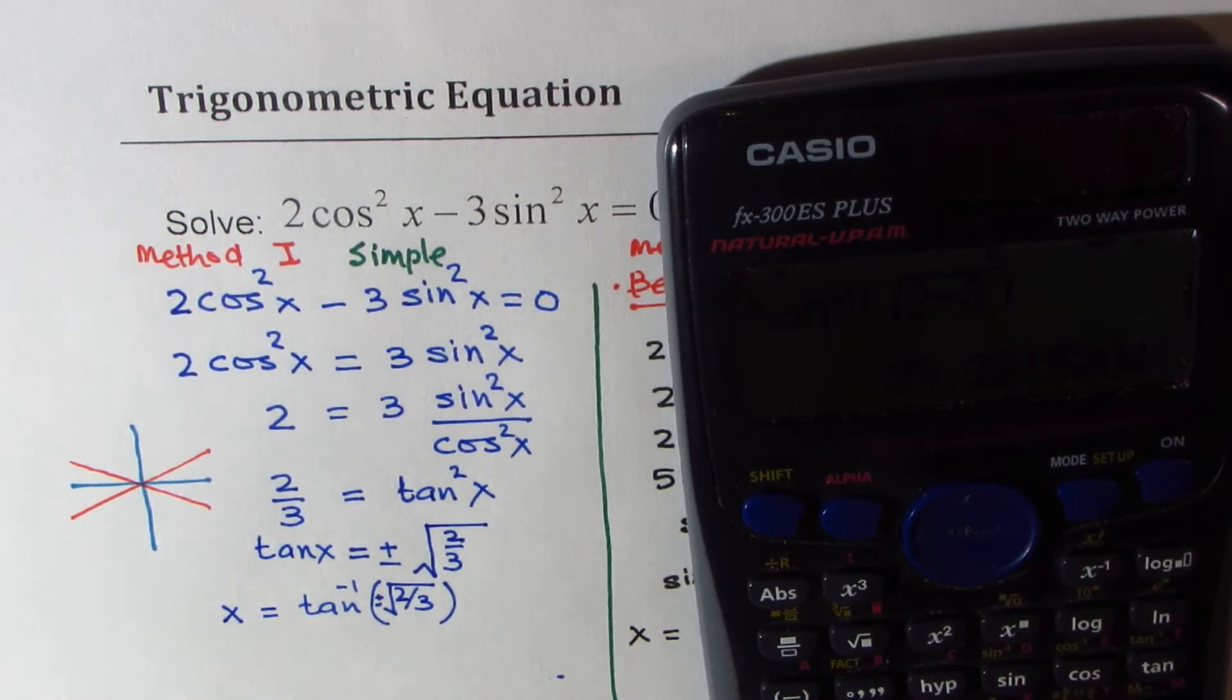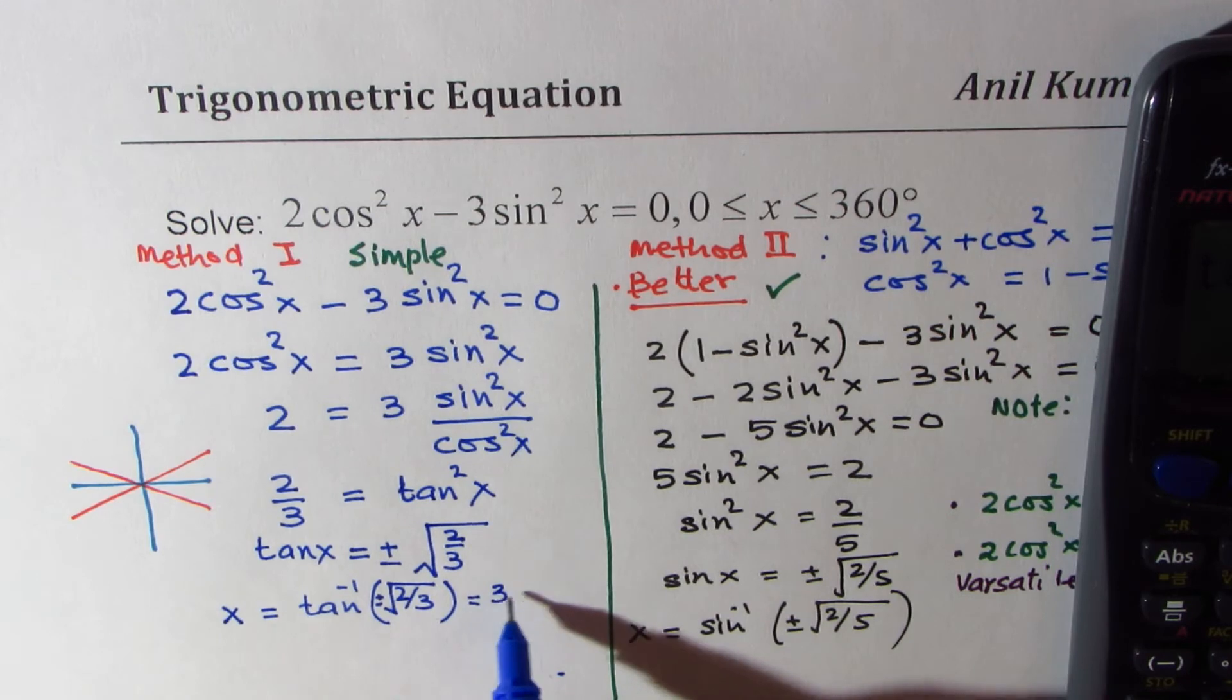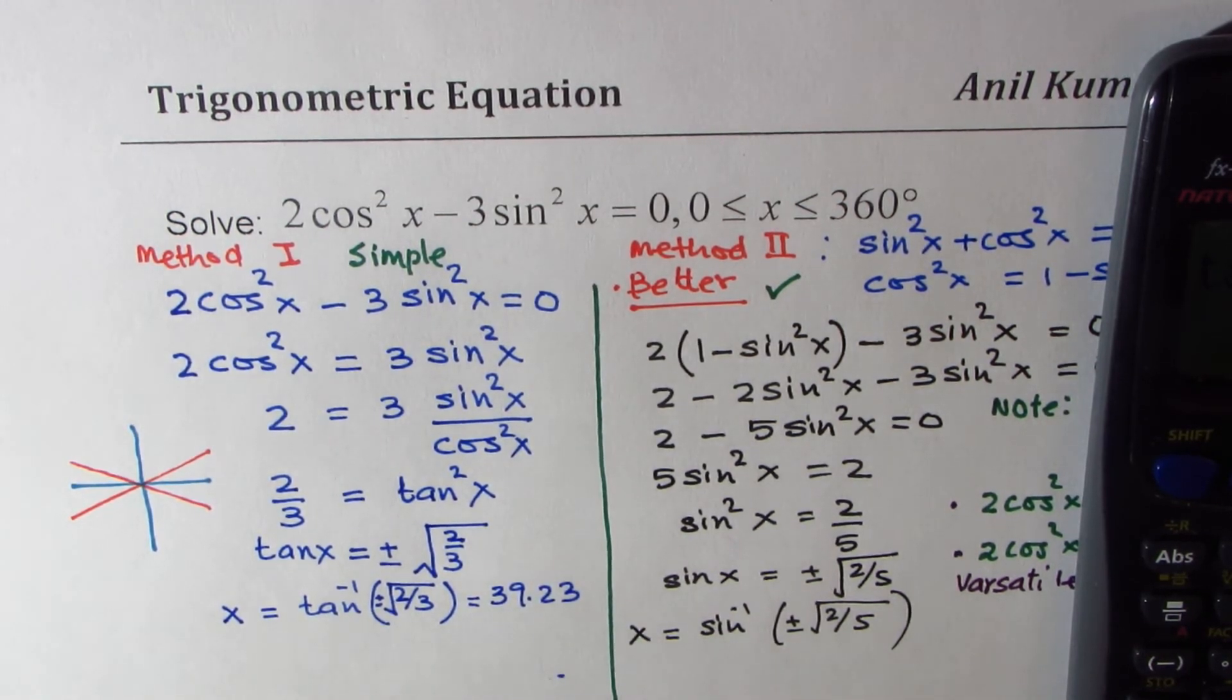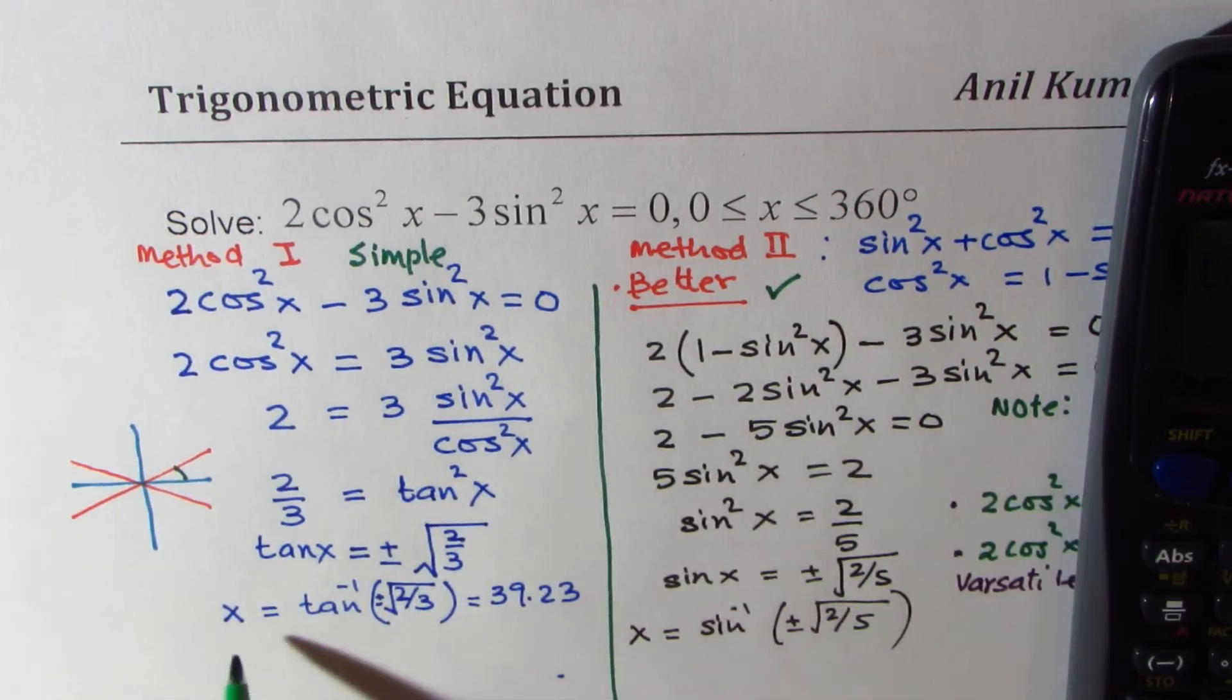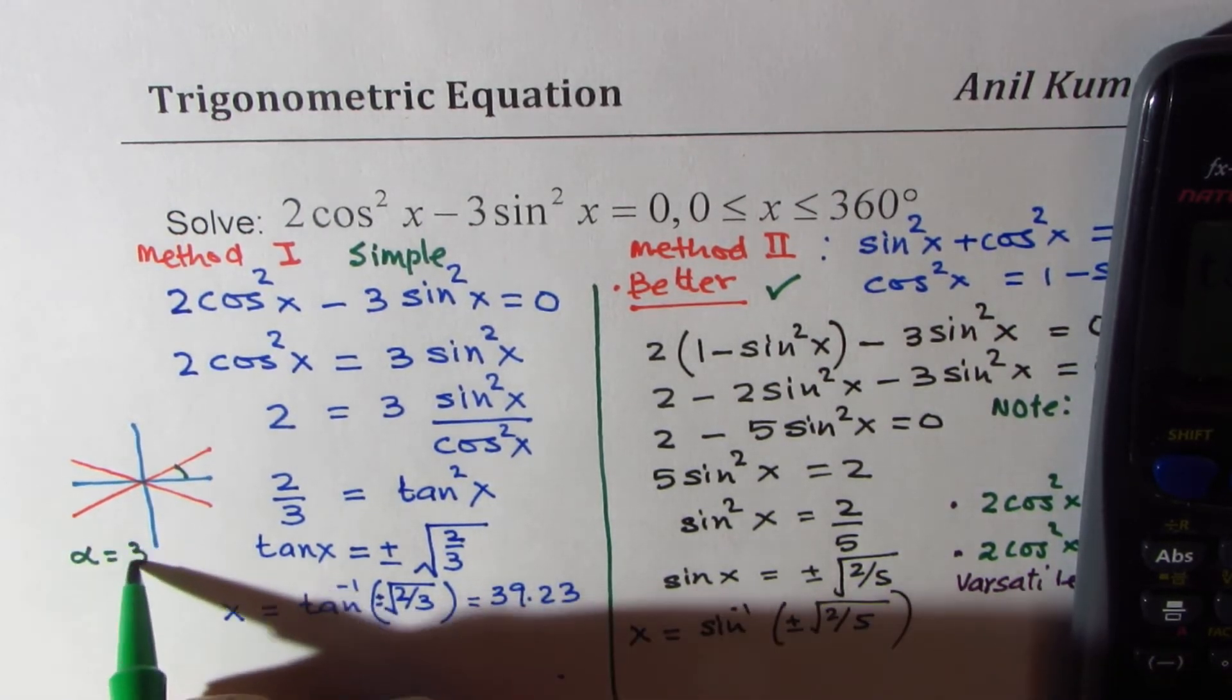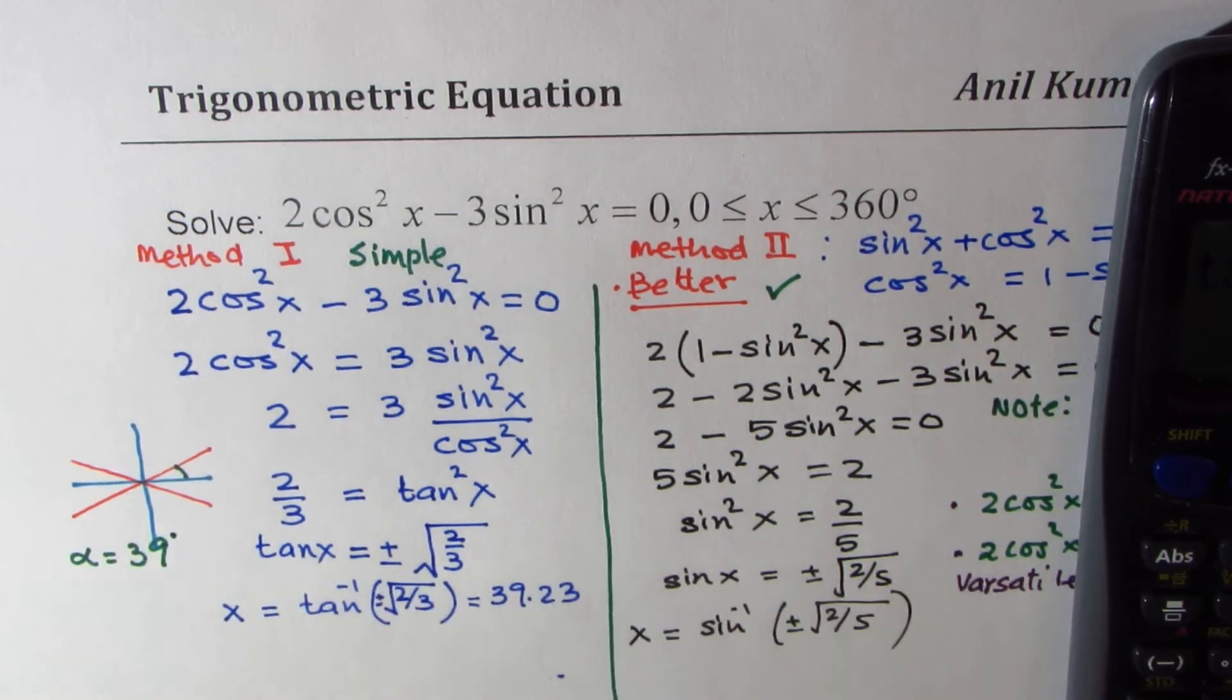Now let's find the answer. We are looking for tan⁻¹(√(2/3)) and that is equal to 39.23 degrees. Now that is one answer. So you get acute angle alpha. The acute angle is, let me round to whole numbers, 39 degrees.